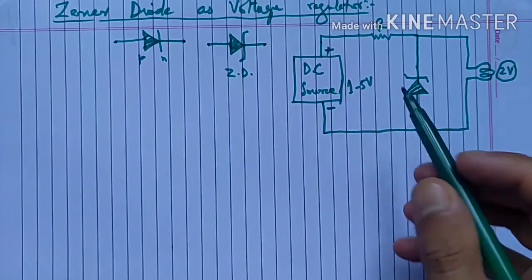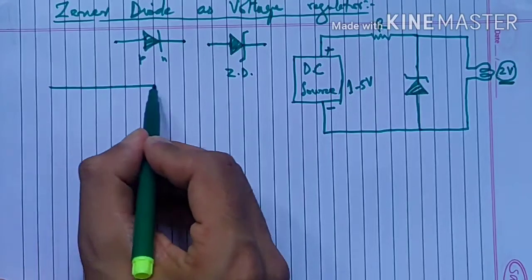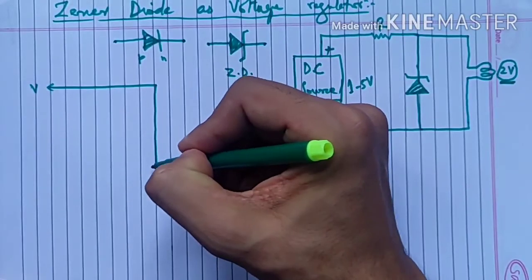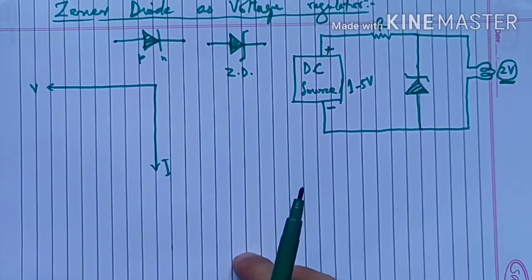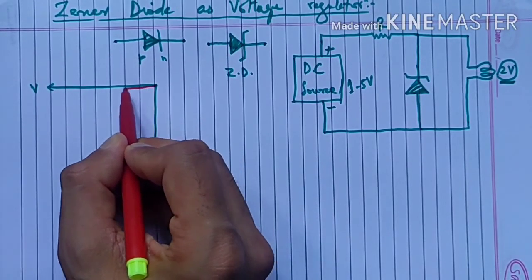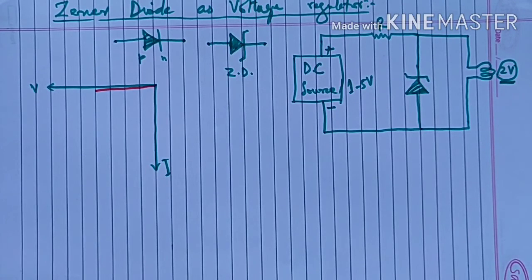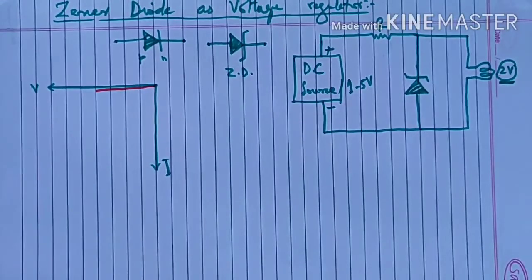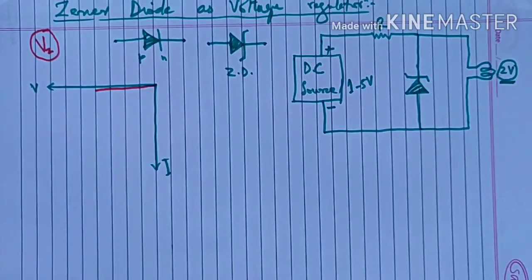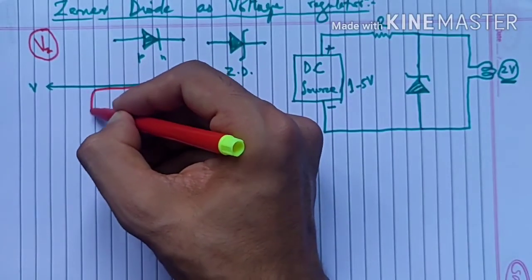यह जो DC source है यह fluctuate हो रहा है, इसका output 1 से लेके 5 तक fluctuate हो रहा है। हमें output में, इस bulb के across, two volt चाहिए। अब अगर हम VI characteristics की तरफ देखेंगे zener diode की - यह voltage axis है, यह current axis है। यह third quadrant में चाहिए because diode is under reverse bias। जैसे आप reverse bias voltage बढ़ा रहे हैं तो current में कोई खास change नहीं हो रहा है, it is very minute change in current। Breakdown voltage for zener diode is called as zener voltage Vz - जब आप उसको hit करोगे, यानि कि reverse voltage जब उसके बराबर होगी तो zener breakdown हो जाएगा।